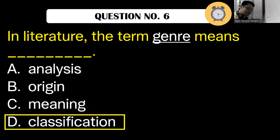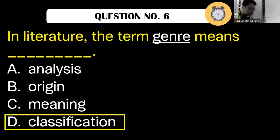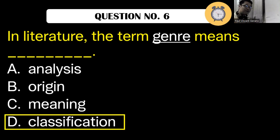The word genre comes from the French language and it means kind or sort of. Genre comes from the French language, and it means kind or sort of.